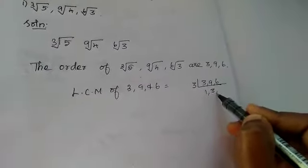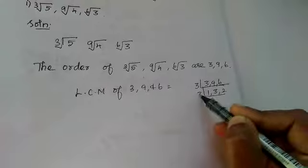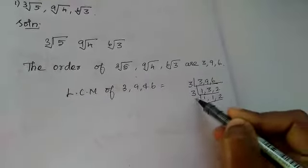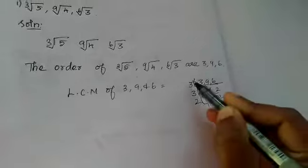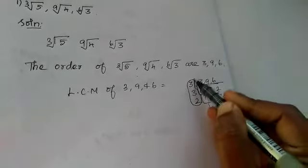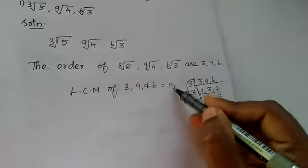3's are 9, 3's are 6. Again divide it by 3. 1, 1, 2. Now 2, 1, 1, 1. So what is the LCM? 3, 3, 2's are 18, it's the LCM.